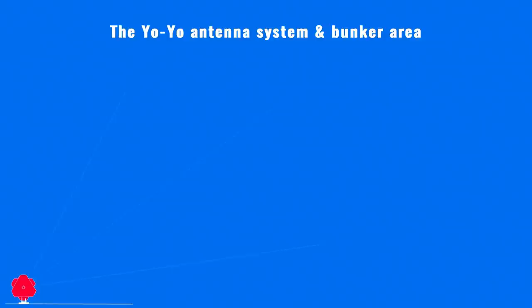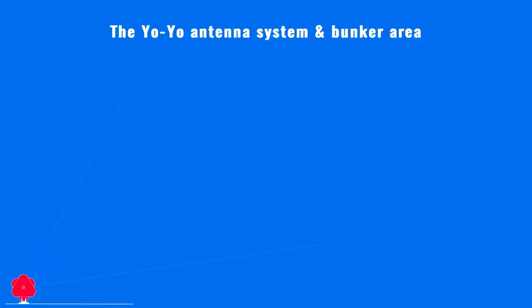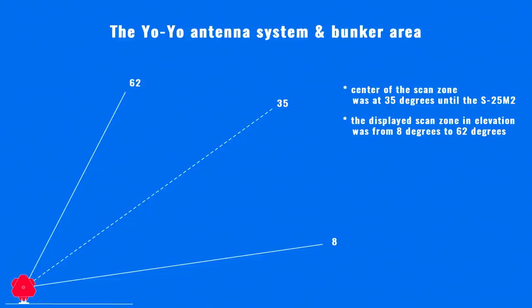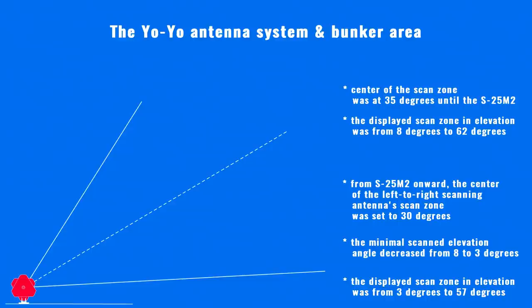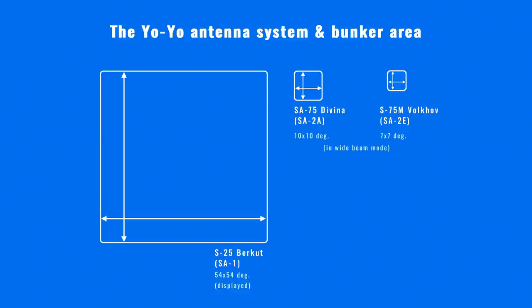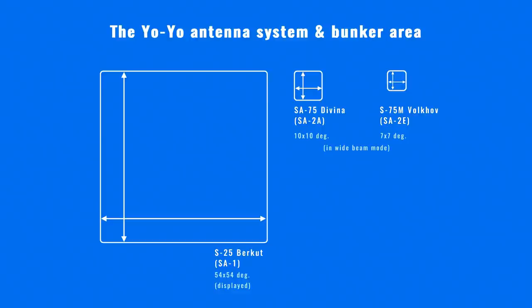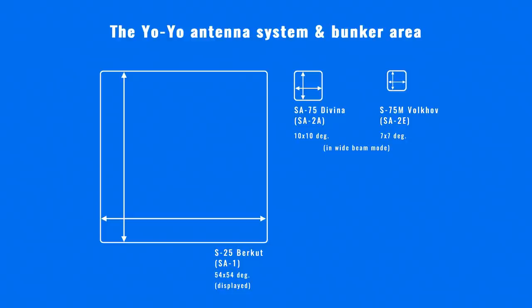The Yo-Yo was the first track-while-scan, or TWS, capable radar system in the world. The large and heavy antenna system made it possible to have such a high scan rate in a large airspace. For comparison, the fire control radars of the following system, the SA-75 Dvina (SA-2A Guideline by NATO), scanned only a 10 by 10 degree area with a similar scan rate, and the later S-75M Volkhov (NATO code SA-2E) scanned an area of only 7 by 7 degrees.